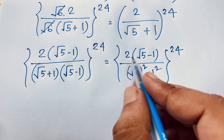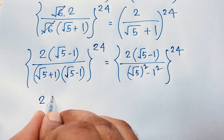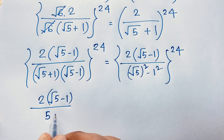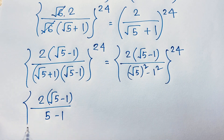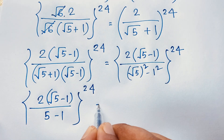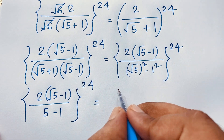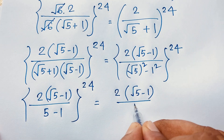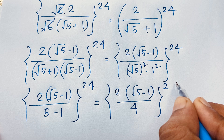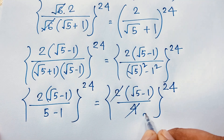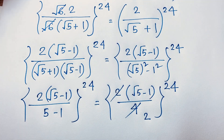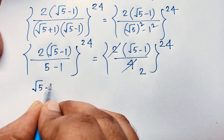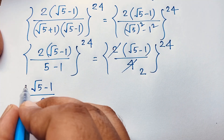Then you can see this expression: it will be 2(√5 − 1) over (5 − 1), which is 4, and the whole bracket is to the power 24. Now here 2 over 4 simplifies, giving us ((√5 − 1) / 2)^24.